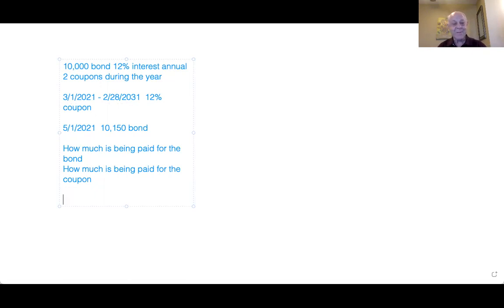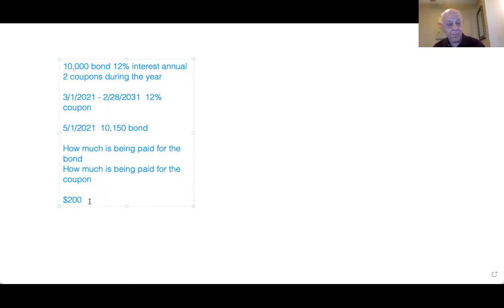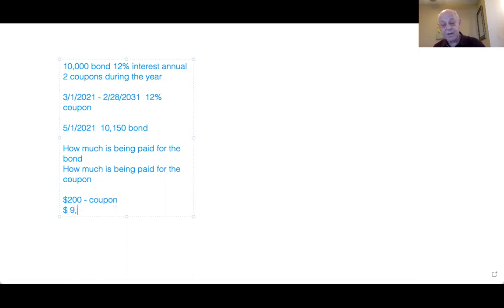The bond was issued on March 1st and it's paying a 12% coupon. 12% on $10,000 is $1,200 in a year — 12 months in a year — so interest is accruing at $100 a month. From March 1st to May 1st is two months, so $200 is being paid for the coupon. That means $9,950 is being paid for the bond itself.